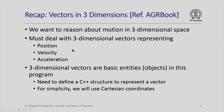Recall that in the last lecture we talked about an example from the AGR book in which we wanted to reason about motion in three-dimensional space. We had to deal with three-dimensional vectors which could represent position, velocity, or acceleration. Therefore, three-dimensional vectors were chosen as the basic entities or objects in our programming endeavor, and we went ahead and defined a C++ structure to represent a vector using Cartesian coordinates.